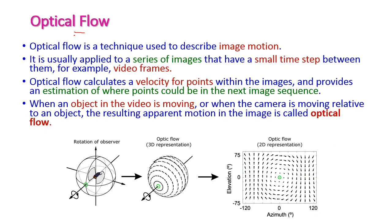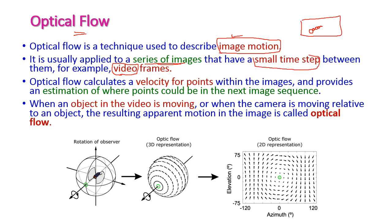Optical flow is a technique used to describe image motion. Image motion is essentially video — a series of images with small time steps between them. Optical flow calculates the velocity of points within the images and provides an estimation of where a point could be in the next image sequence.